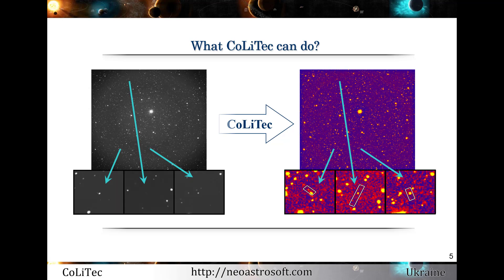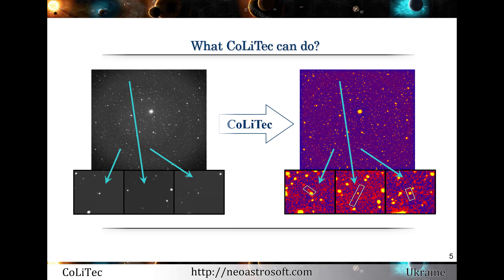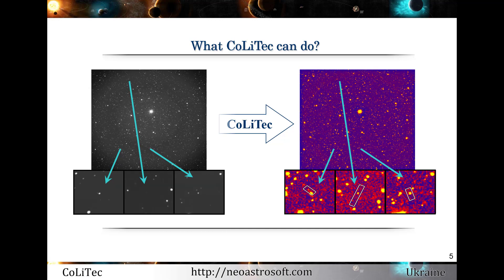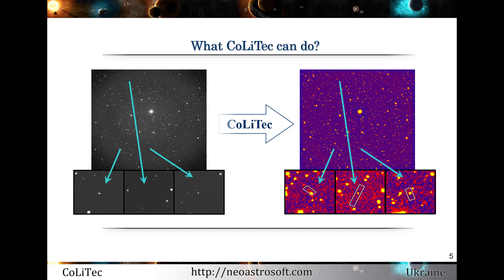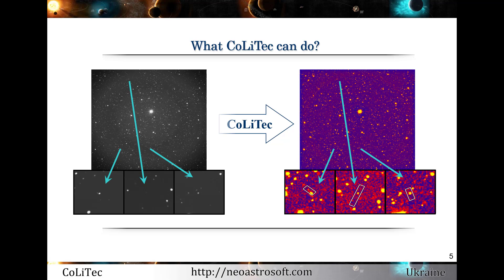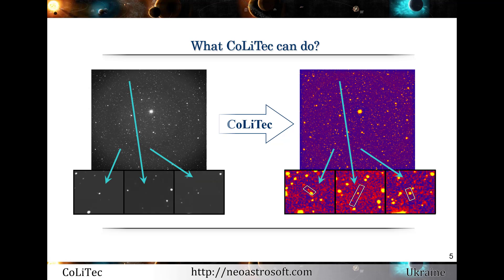On this slide, you can see the results of frame processing by the Kalytec software. There are raw frames on the left side and processed frames with alignment and centered view on the right side. Also, detected moving objects are presented on the right side.